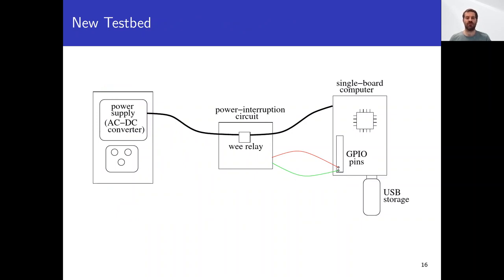Here is the basic idea for our latest power failure testbed. The host computer is the only computer in the picture. Persistent application data lives in a USB-attached storage device hanging from the host. The host can cut its own power by sending a signal via GPIO pins to the power interruption circuit. The heart of the power interruption circuit is a tiny electromechanical relay. Power from the power supply runs through the relay's normally closed contacts, until the interruption circuit cuts power by switching the relay's poles to the normally open contacts. We use a relay because it physically disconnects power, just like yanking a power cord.